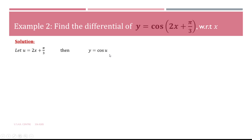We differentiate each function separately. For u with respect to x: du/dx gives us 2, since the differential of 2x is 2 and the differential of π/3 is 0 because it's a constant. Then differentiating y with respect to u: dy/du equals minus sine u, since the differential of cos u is minus sine u.